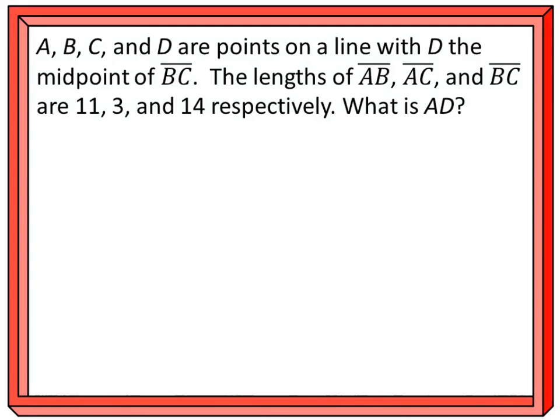A, B, C, and D are points on a line with D the midpoint of BC. So, let's draw something here. We got B and C for sure. B and C. We know those go here and D being the midpoint of those two.